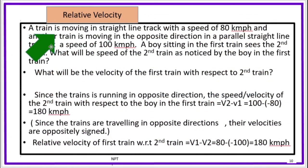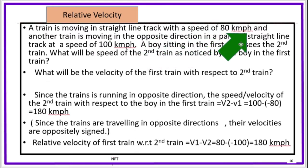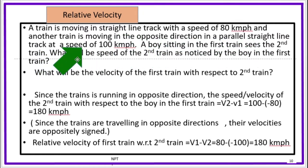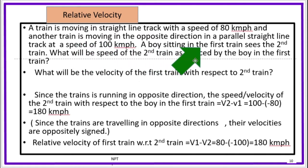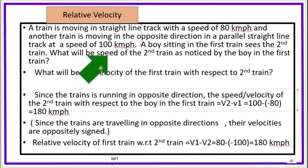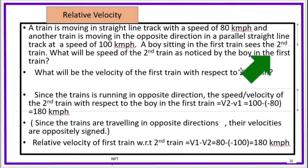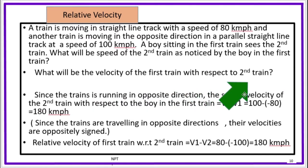A train is moving on a straight line track with a speed of 80 km per hour, and another train is moving in the opposite direction on a parallel straight line track at a speed of 100 km per hour. A boy sitting in the first train sees the second train. What will be the speed of the second train as noticed by the boy in the first train? What will be the velocity of the first train with respect to the second train?